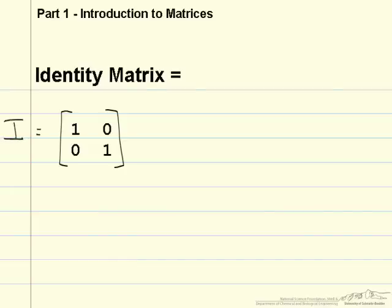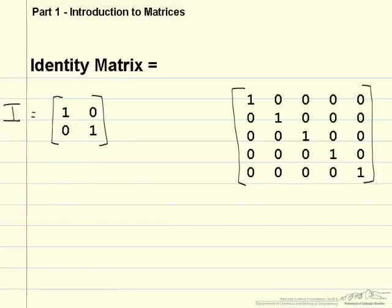There are two unique things about the identity matrix. First is the identity matrix has to be square, so it will always have the same number of rows as it does columns. And the second is that the identity matrix is completely filled with zeros except for a diagonal line of ones down its side.